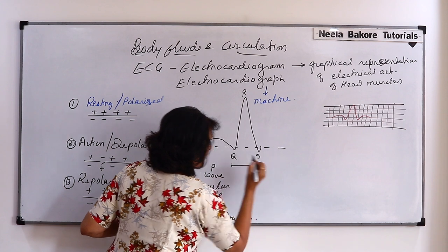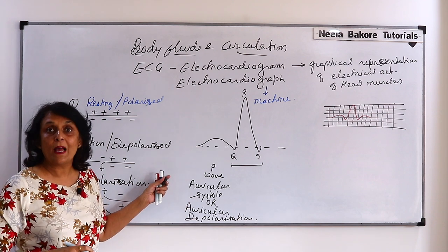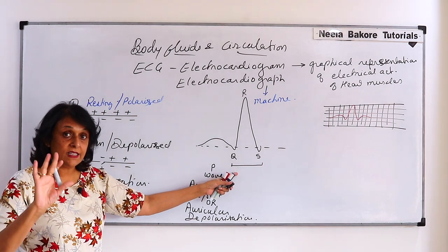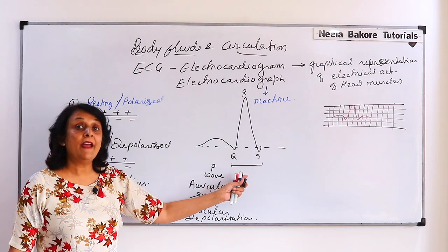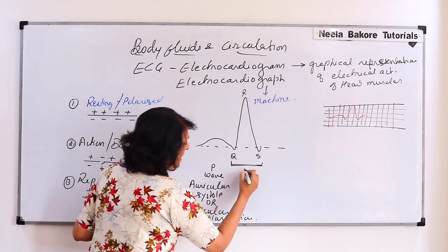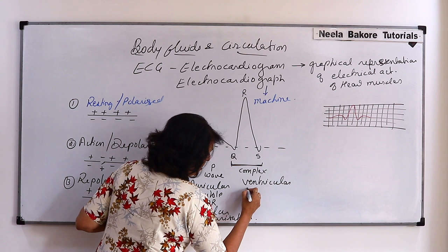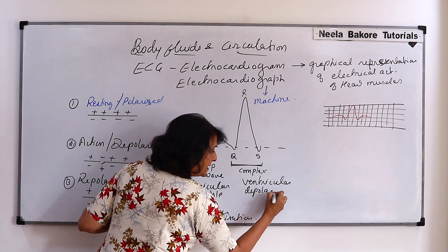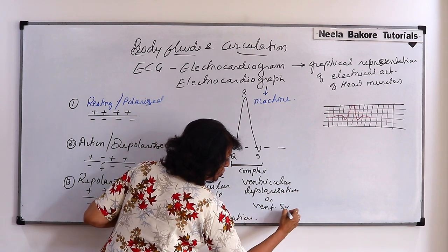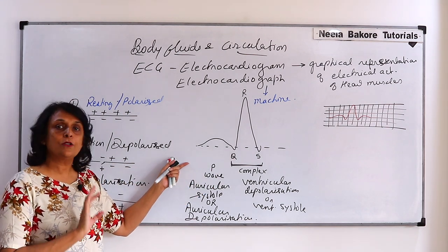There will be a charge movement, and our machine detects a big peak. This is because the ventricles contract next. In the cardiac cycle: first auricular systole, then ventricular systole. The complex we call QRS complex represents ventricular depolarization, or ventricular systole.